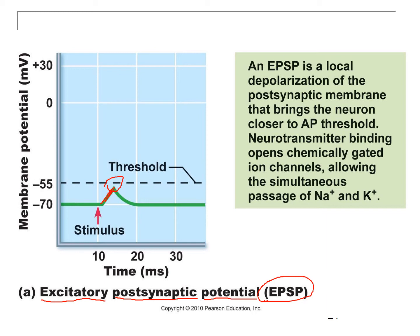With an EPSP, chemically-gated ion channels are opened, and these channels allow the passage of sodium and potassium at the same time. The reason this is still depolarizing is that sodium and potassium don't cancel out — sodium passage into the cell is faster than potassium passage out of the cell, because the concentration gradient for sodium is much larger than for potassium. So sodium comes in faster than potassium leaves, making this an excitatory postsynaptic potential. These channels are sodium-potassium channels.